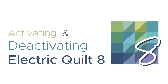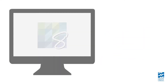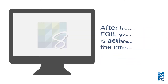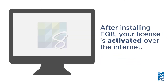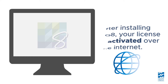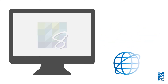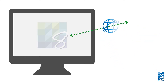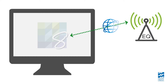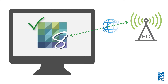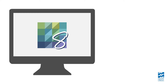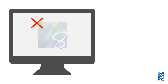In this video, we'll discuss the activation system that is part of your Electric Quilt 8. After installing EQ8, your license is activated over the internet. Activation is a signal from your computer to EQ's activation server, letting us know that your license is valid. EQ8 cannot be used if the license is not activated on that computer.